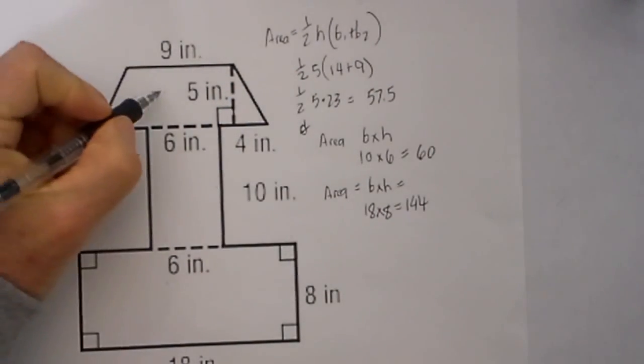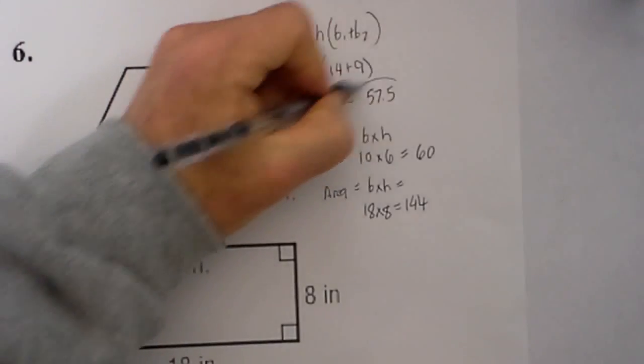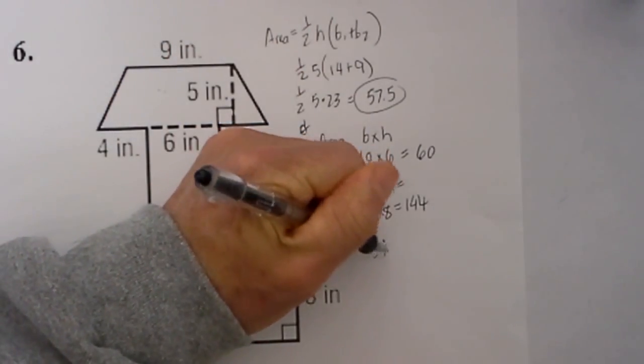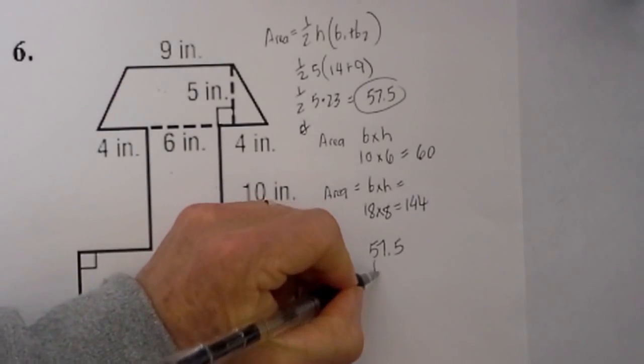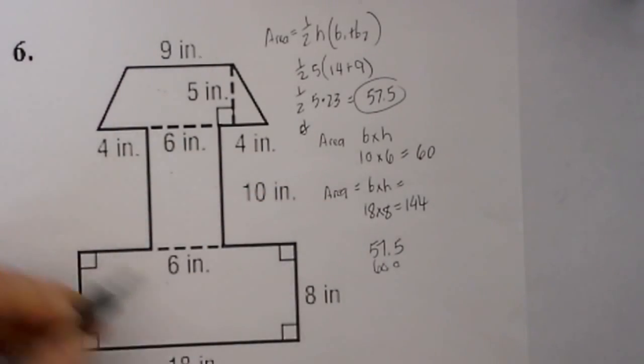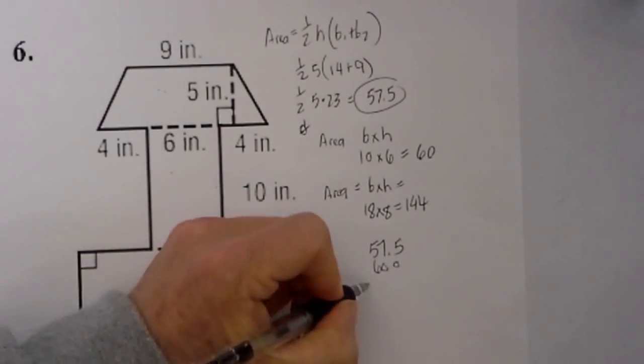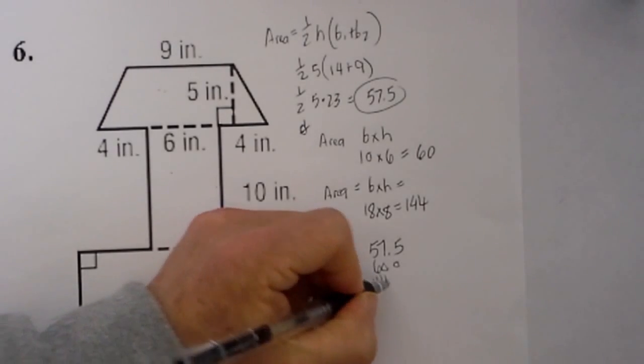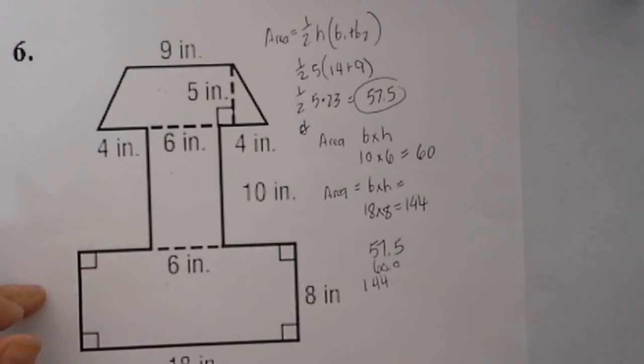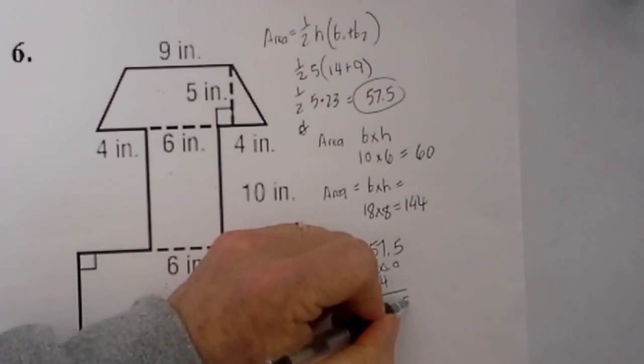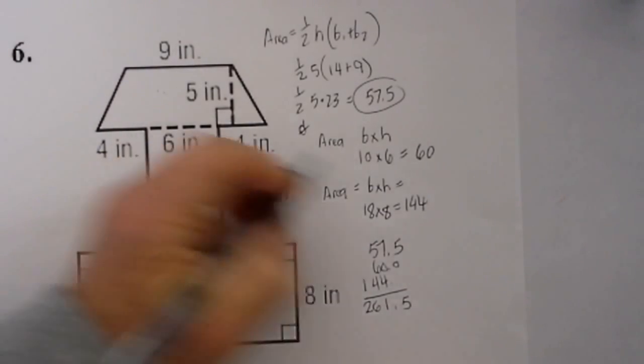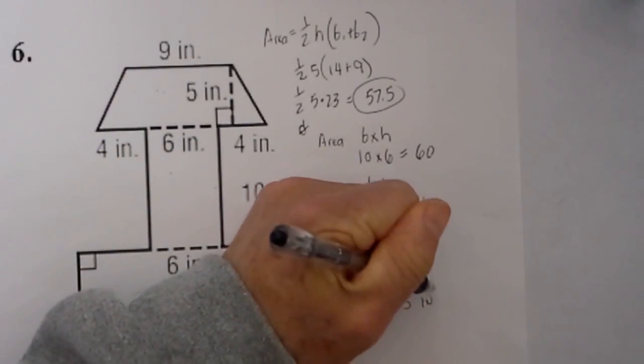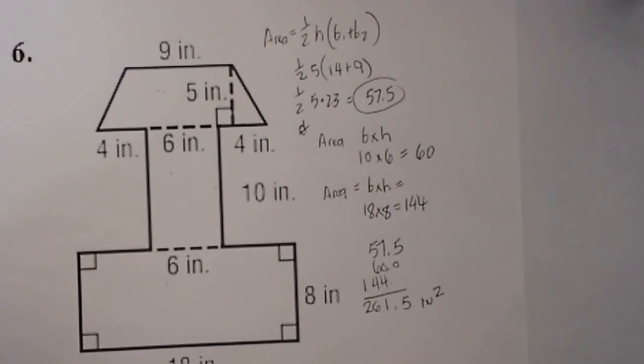So now let's add the area of the trapezoid, which is 57.5, plus the area of this rectangle, which is 60, plus 144, and that is equal to 261.5, and the unit of measure is inches squared.